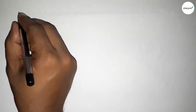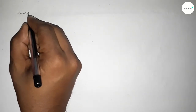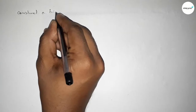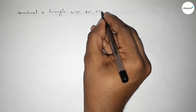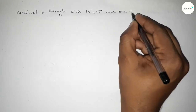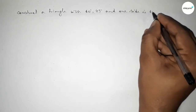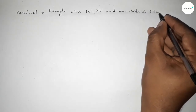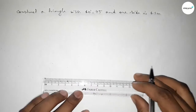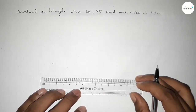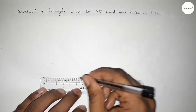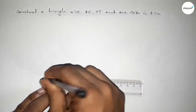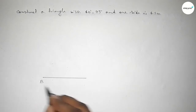Hi everyone, welcome to SSR Classes. Today in this video we have to construct a triangle with two given angles: 60 degrees and 45 degrees, and one side 6.5 centimeters. Let's start. First of all, we have to draw a line of length 6.5 centimeters. Taking point B here and point C here.